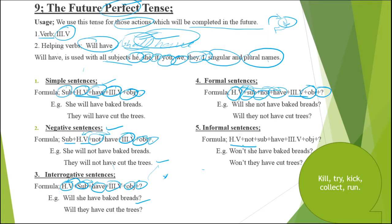And informal sentences — the last type — are those in which we ask a question and deny the statement in an informal, friendly way with juniors or those we are free with. Formula: won't + subject + have + third form of verb + object + question mark. 'Will not' is contracted to 'won't.' Note: 'have' shows that your work is perfect; 'be' shows continuous; 'have been' shows perfect continuous. Example: 'Won't she have baked breads?' 'Won't they have cut trees?'